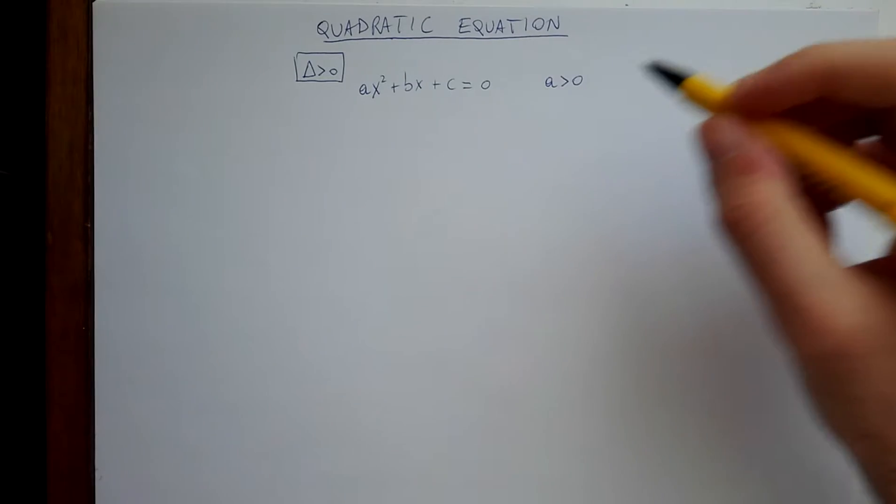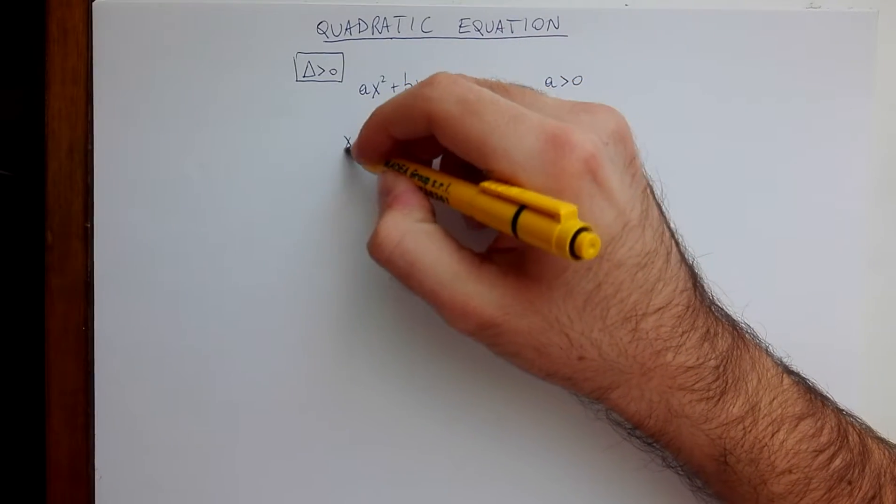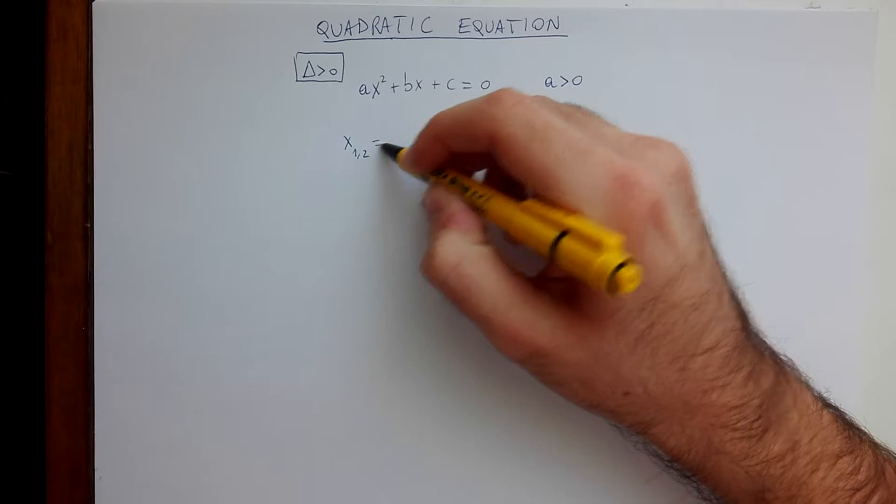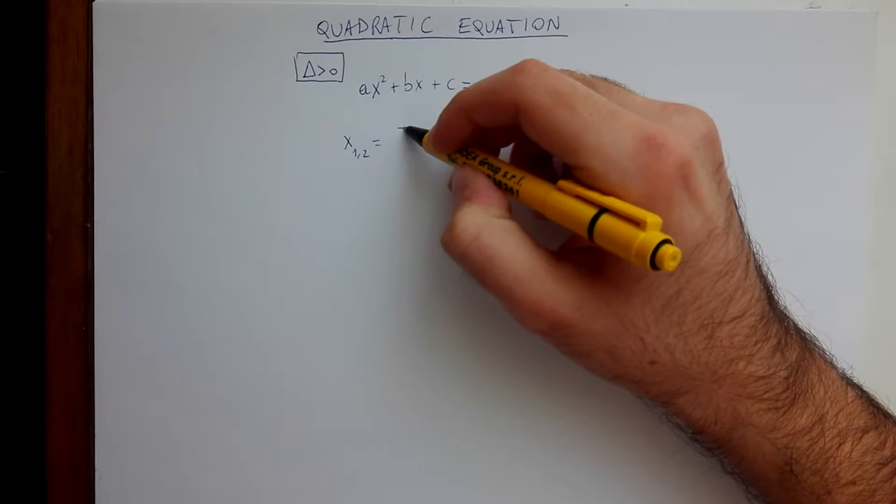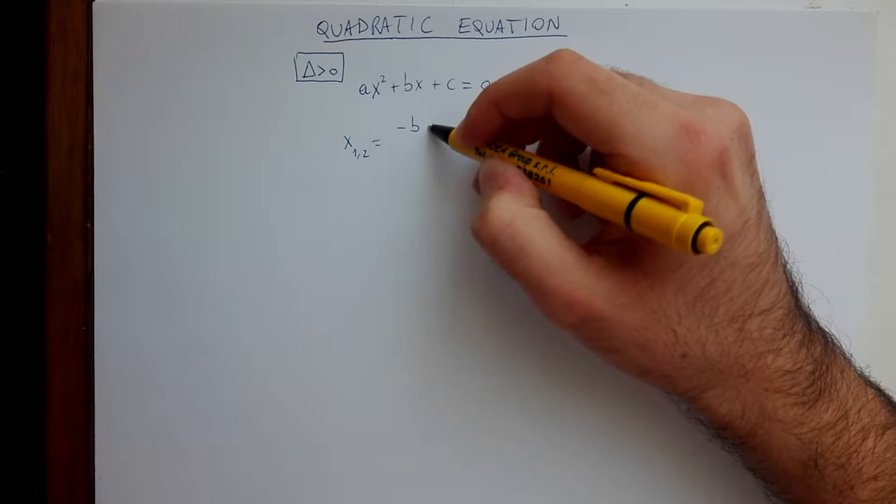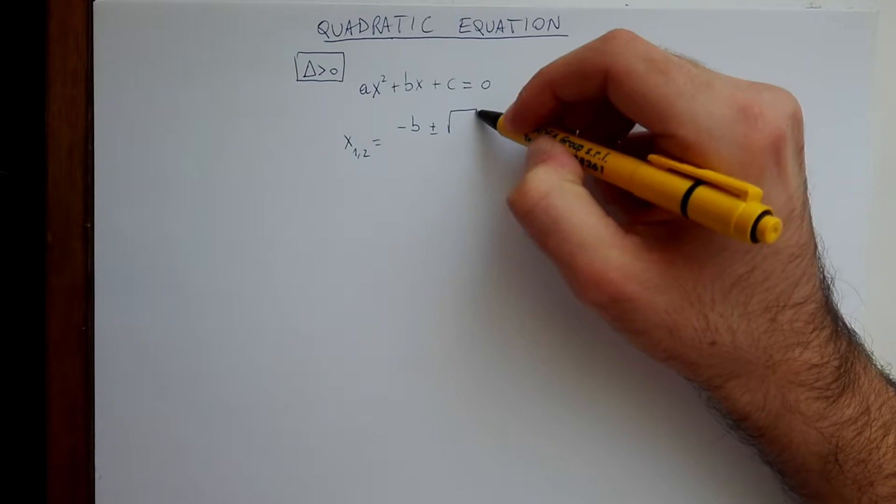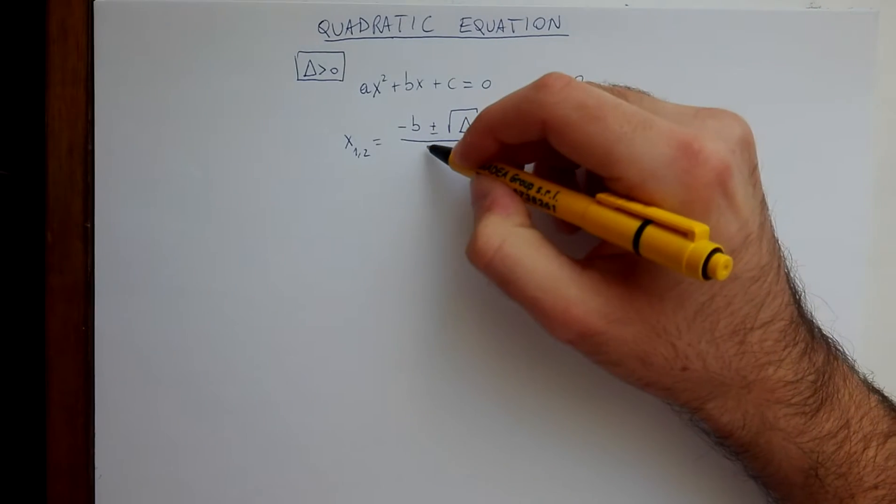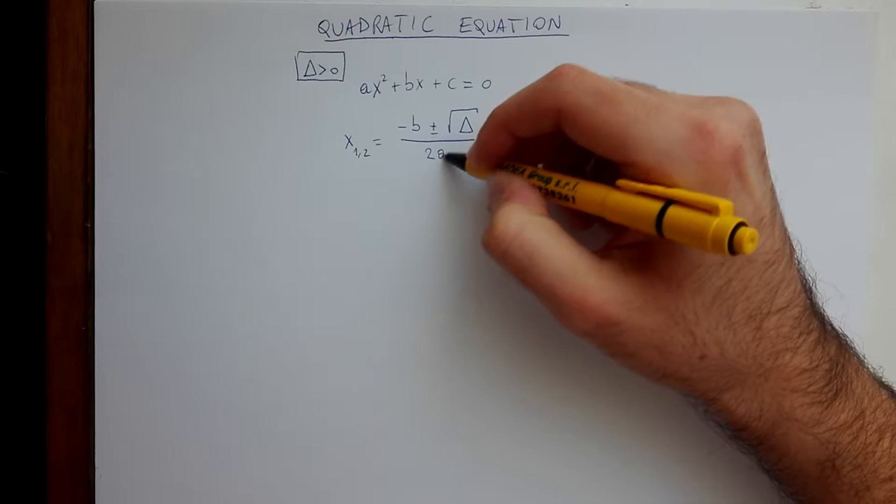The formula to have the solution is x1,2 is given by minus b plus or minus square root of delta divided by 2a,